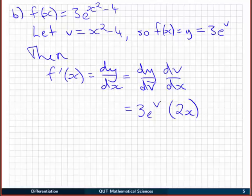Again, we're going to clean this up and replace all the v's with their form in terms of x. So we have 3 times 2 is 6, e to the v becomes e to the x squared minus 4 times x. So then we have a couple of examples of the chain rule giving us the instantaneous rate of change of composite functions.